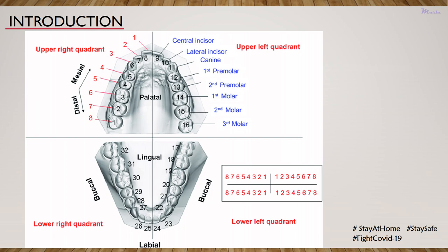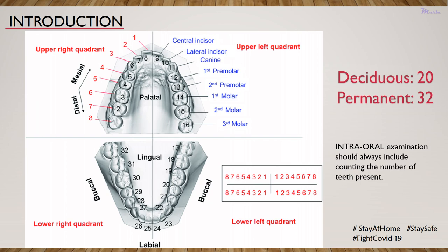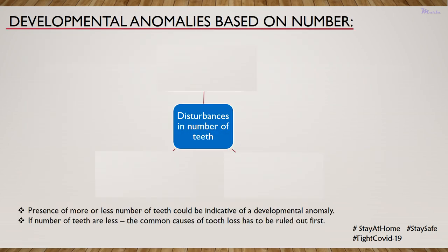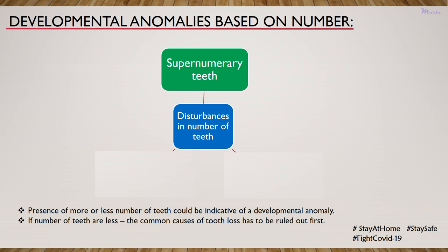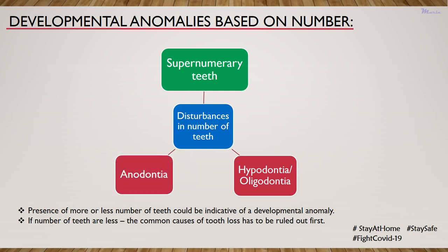Here you can see the dentition in each arch. The permanent dentition shows a total of 32 teeth whereas the deciduous dentition shows a total of 20 teeth. Intraoral examination should always include counting the number of teeth present. A decrease or increase in the number of teeth may indicate a developmental anomaly. These disturbances may be an increase in number, referred to as supernumerary teeth, or a decrease referred to as hypodontia or oligodontia, or in rare instances the total absence of teeth, referred to as anodontia.